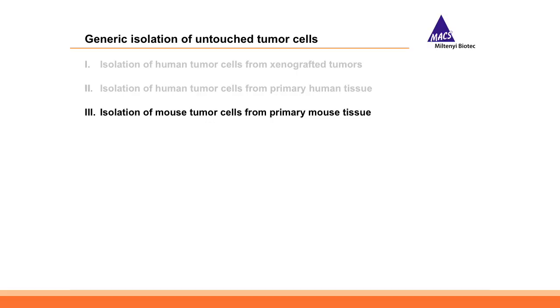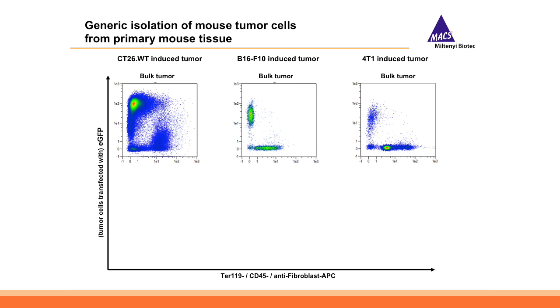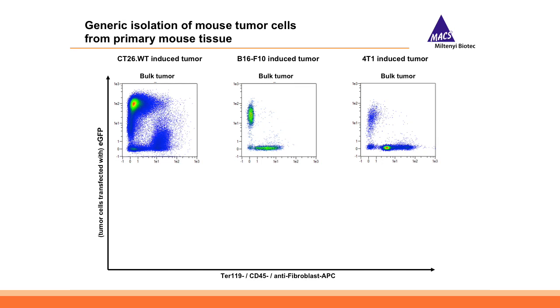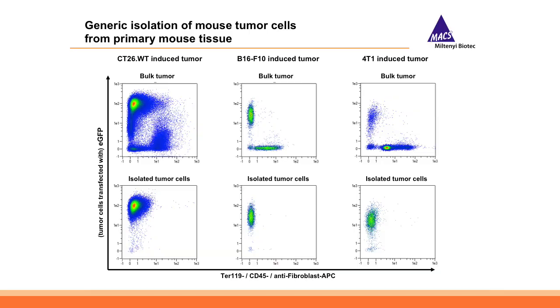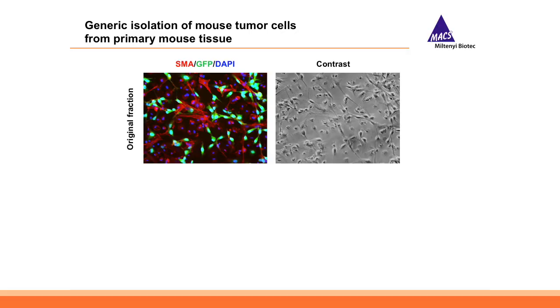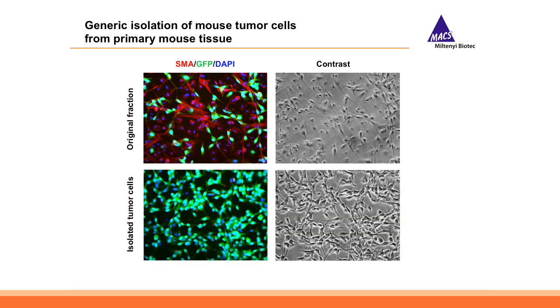The last example is isolation of mouse tumor cells from primary mouse tumors. Similarly to the fully human setting, we had to define antibodies to deplete lineage cells while keeping all tumor cells. Because there is no reliable pan-tumor marker in the mouse (mouse EpCAM is also expressed on blood cells), we lentivirally label cells with GFP before in vivo injection to track them. Shown here are CD26B6 B16 tumors — after applying this separation protocol, you end up with very nice and homogeneous GFP-positive tumor cells, with cultures going from very heterogeneous to homogeneous GFP-positive cells after separation.